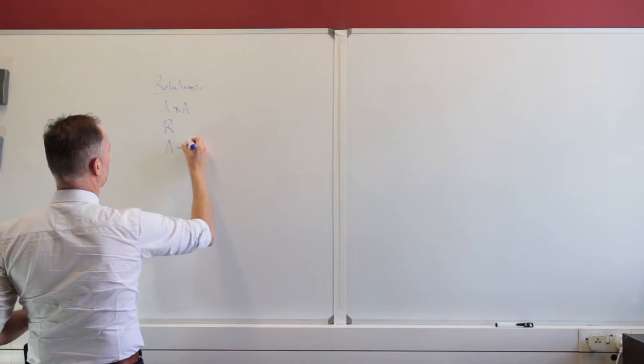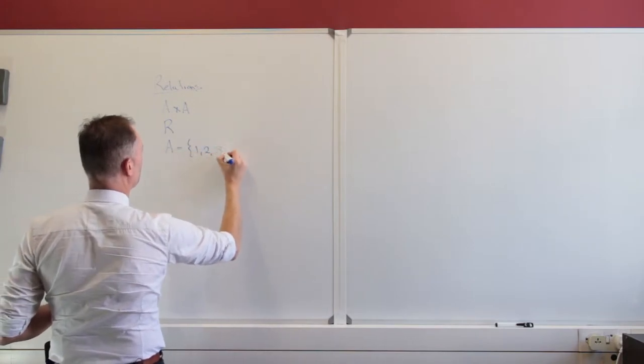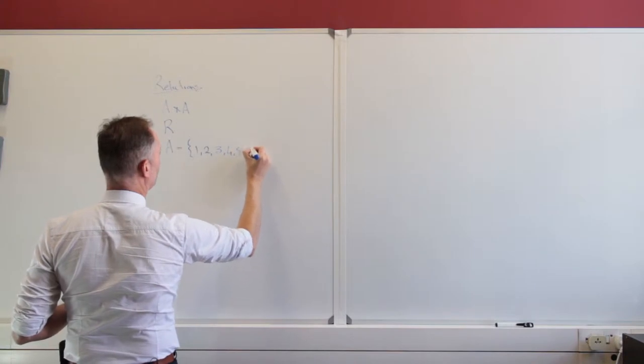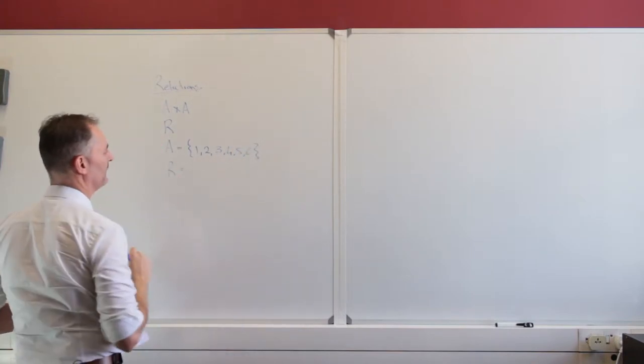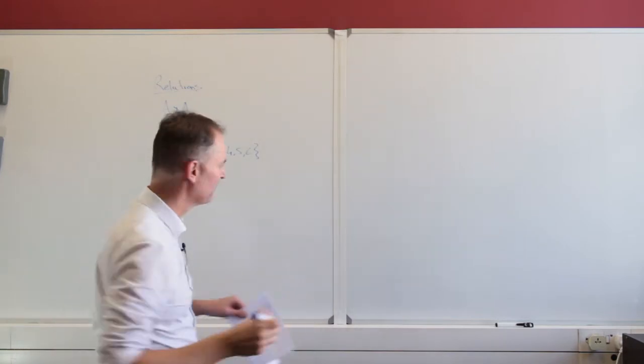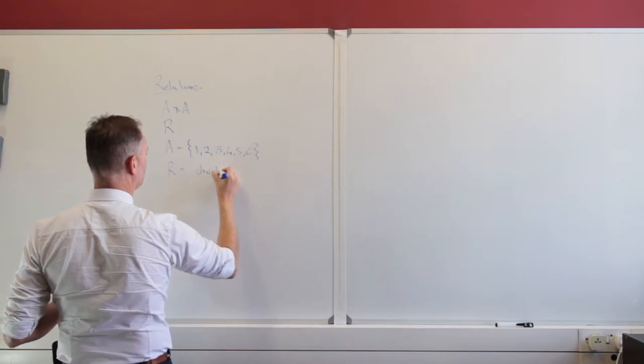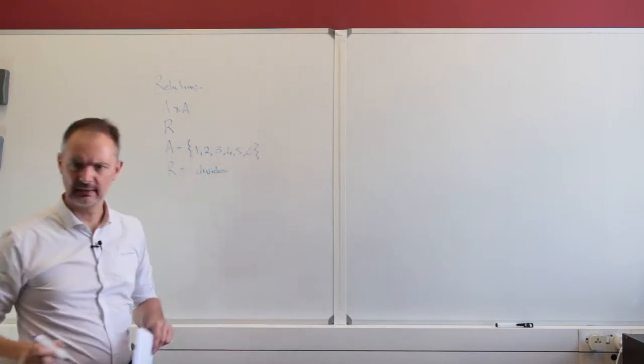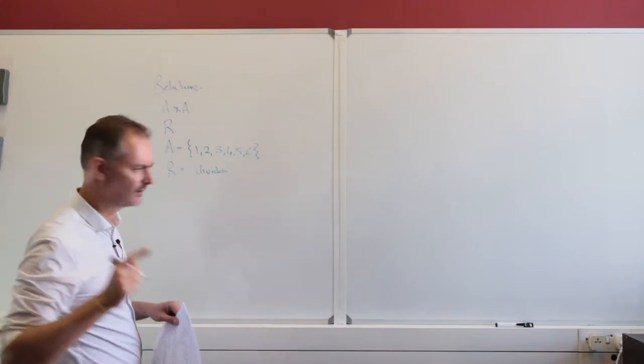So imagine my set A is just the values 1, 2, 3, 4, 5 and 6. And my relation could just be divides. Let's just make divides. So that looks a bit odd, but let's have a look at this. And then we can also see the notation that we are going to use.